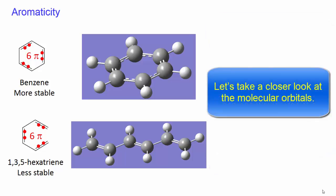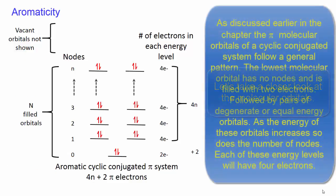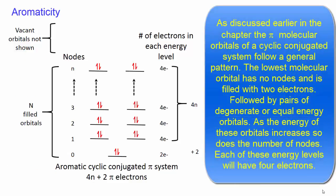Let's take a closer look at the molecular orbitals. As discussed earlier in the chapter, the pi molecular orbitals of a cyclic conjugated system follow a general pattern. The lowest molecular orbital has no nodes and is filled with two electrons, followed by pairs of degenerate or equal energy orbitals. As the energy of these orbitals increases, so does the number of nodes.